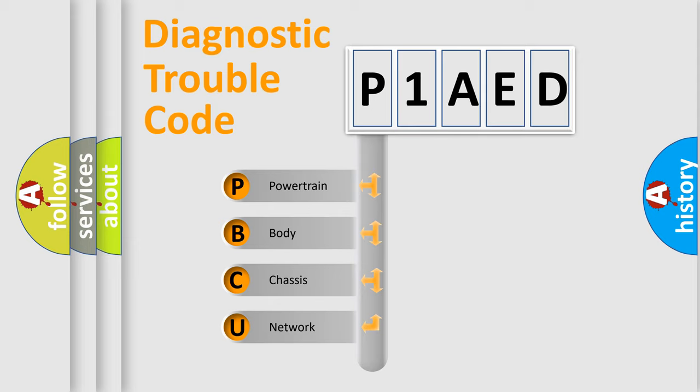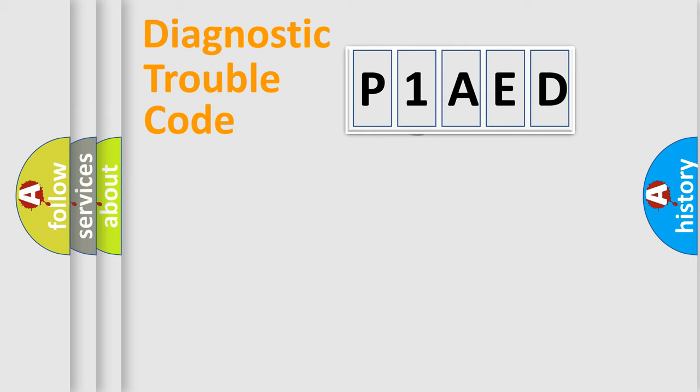We divide the electric system of automobile into the four basic units: Powertrain, Body, Chassis, and Network. This distribution is defined in the first character code.